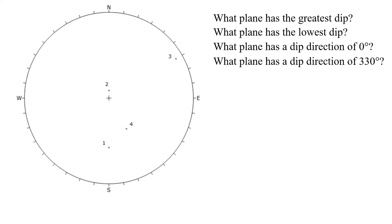One more exercise — this one is a little bit more difficult, but if you understand the difference between great circles and poles you should be able to answer. What plane has the greatest dip? For poles, it's the opposite compared to great circles — the one furthest from the center. Number 3 is really the furthest, so this plane of discontinuity has a very high dip, almost a vertical angle. What plane has the lowest dip? For the lowest dip using poles, it should be close to the center — that's number 2.